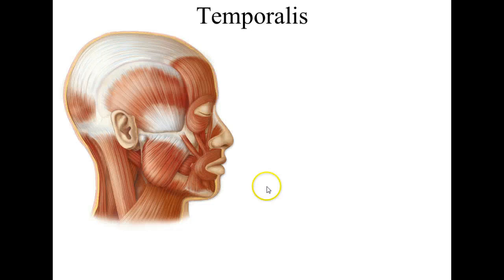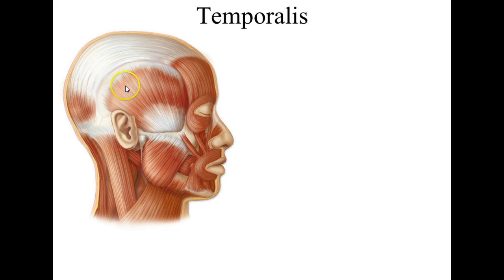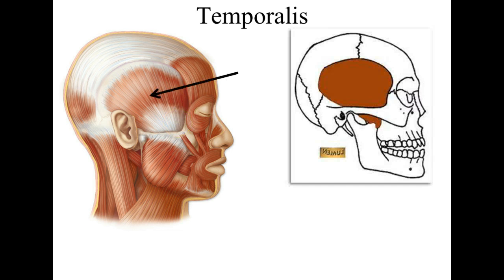So here's the first of the four: temporalis. Take a wild guess as to where the temporalis is located — I'm going to say the temporal bone. This is a really nice image here; you can see the grain of the muscles kind of heading towards the front of the face.